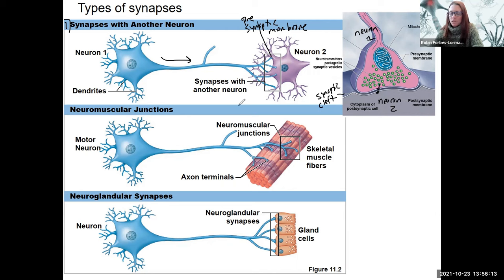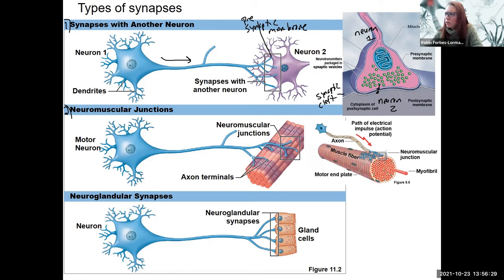So that's one type of synapse. Another type is neuromuscular junctions — this is a motor neuron that's going to synapse with a skeletal muscle. The neuromuscular junction is where those axon terminals contact the sarcolemma of the motor neuron, and that is going to cause contraction of the skeletal muscle.